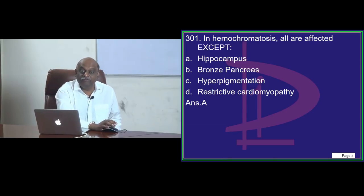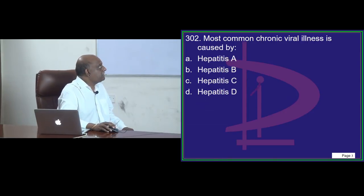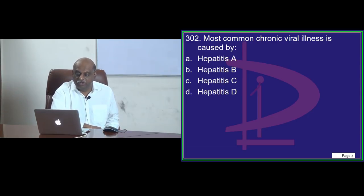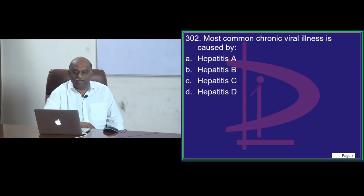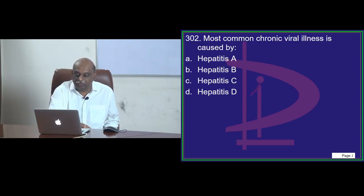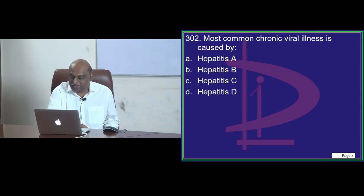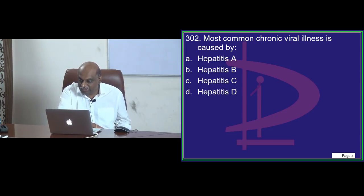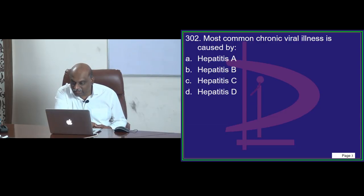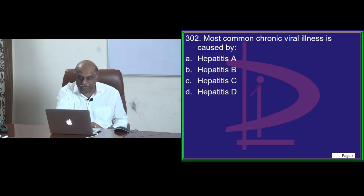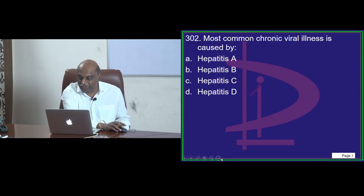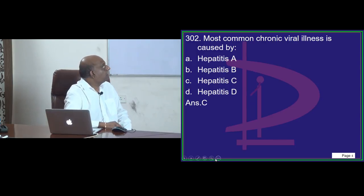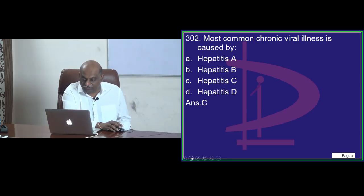Madhushri, you have to be very careful — this is a very easy question. You answered it wrong, which means you need to be doubly careful. What is the most common chronic viral illness out of all these hepatitis group of infections? Ravi is proposing Hepatitis C, Kulkarni also. Nagarajan is proposing Hepatitis B. It is Hepatitis C — the most common chronic viral illness. C for chronic.